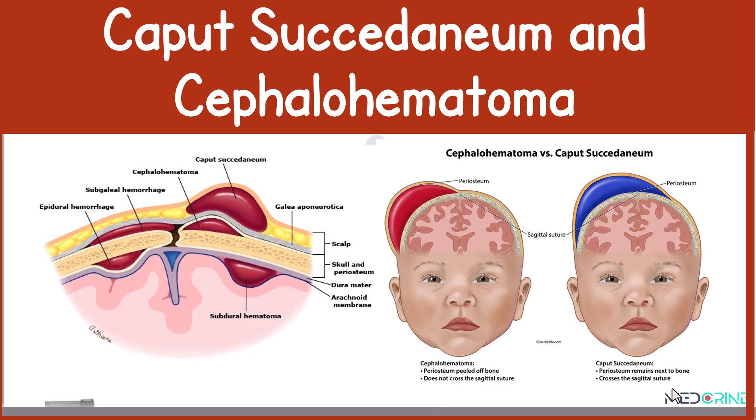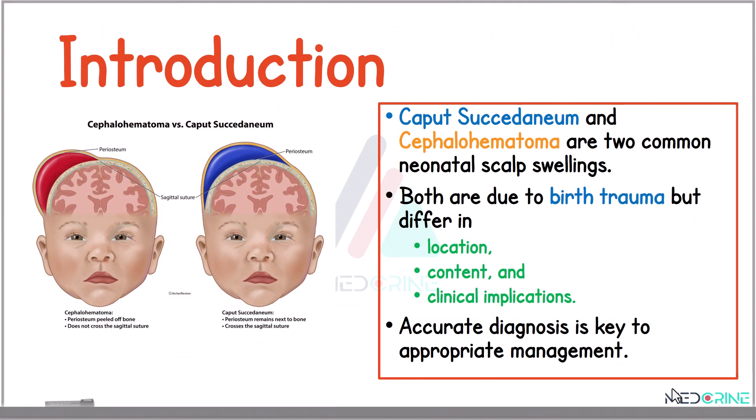Today we shall be looking at caput succedaneum and cephalohaematoma. These are two common neonatal scalp swellings that occur during delivery. Both conditions occur due to birth trauma, but they differ in location, content, and clinical implication. Therefore, it is important to make an accurate diagnosis for appropriate management.